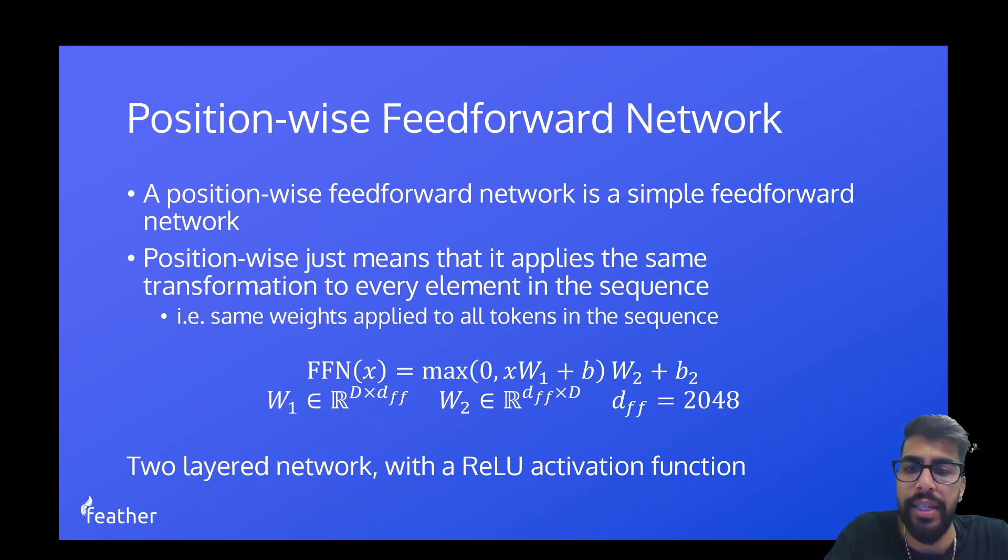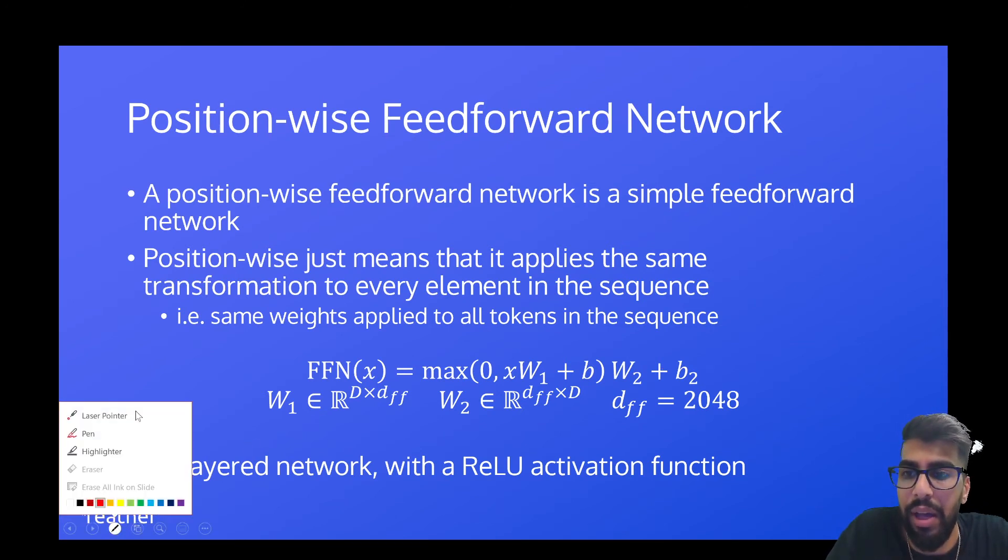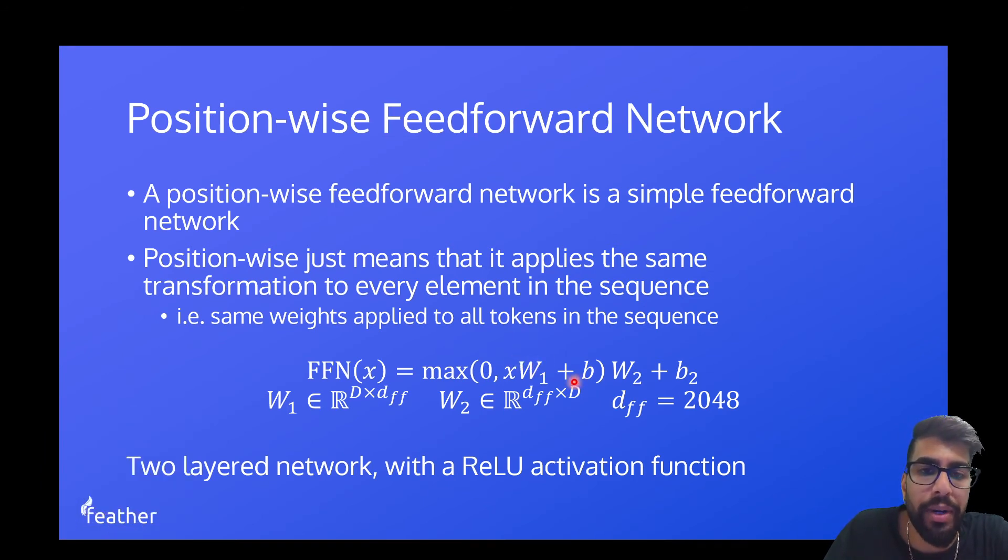Okay and the way that this is given is in maths, in the paper this is given as max of 0, xW1 plus b times W2 plus b2. So just to provide you with some brief intuition about how you should be thinking about something like this: okay when we see W plus b, and sorry there should be a b1 here, we should consider this as a linear transformation. So in torch we would literally write nn.linear. Now we will call forward of this with x and we're in this max function. Max between 0 and x, well that's a relu activation function. So what this is saying here is we have a two-layered network, we have W1 and W2, so there's two layers here and there's a relu activation on the output of W1.